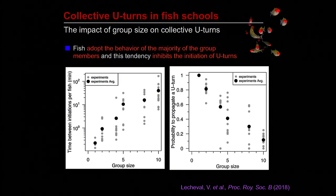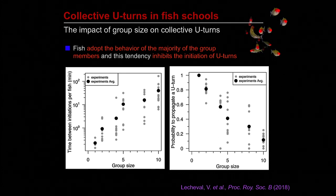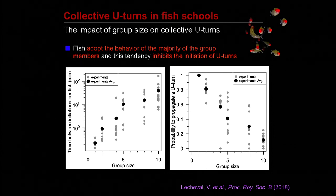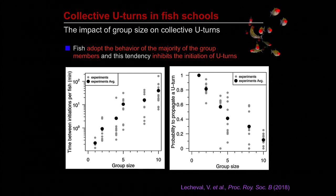The decrease in the number of collective U-turns is mainly a consequence of the fact that the probability of a fish to initiate and propagate a U-turn decreases as group size increases. Individual fish tend to adopt the behavior of the majority of the group members, and this tendency inhibits the initiation of U-turns.